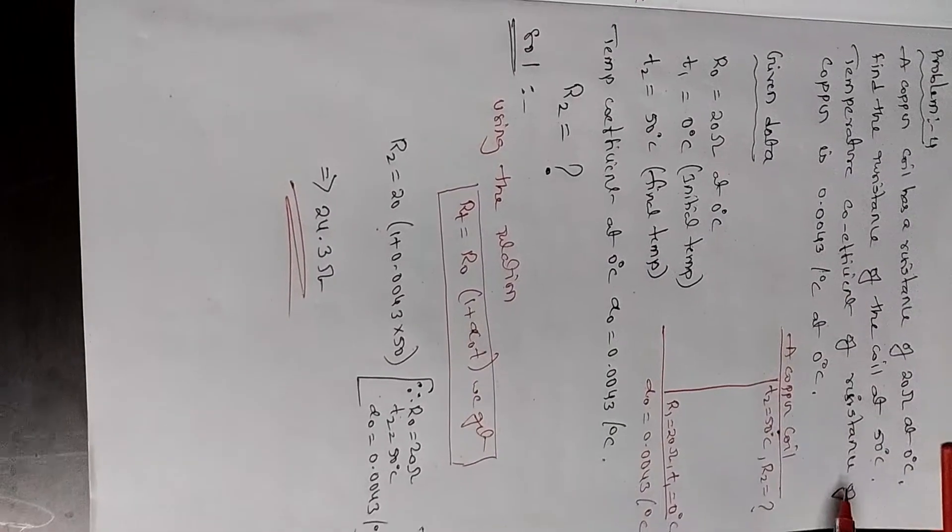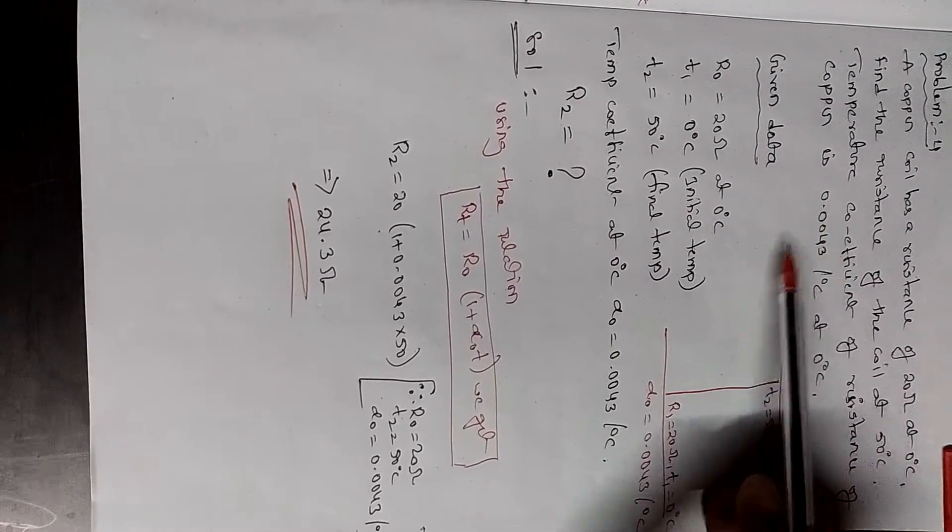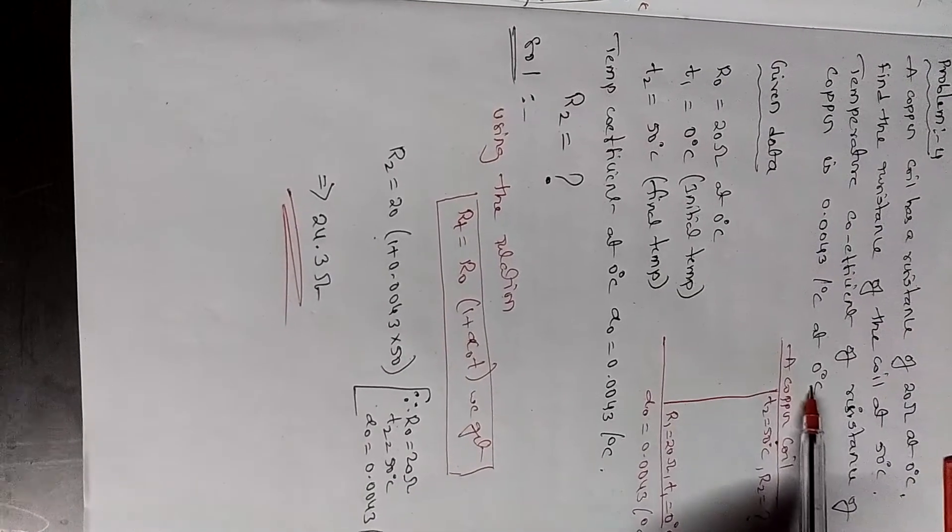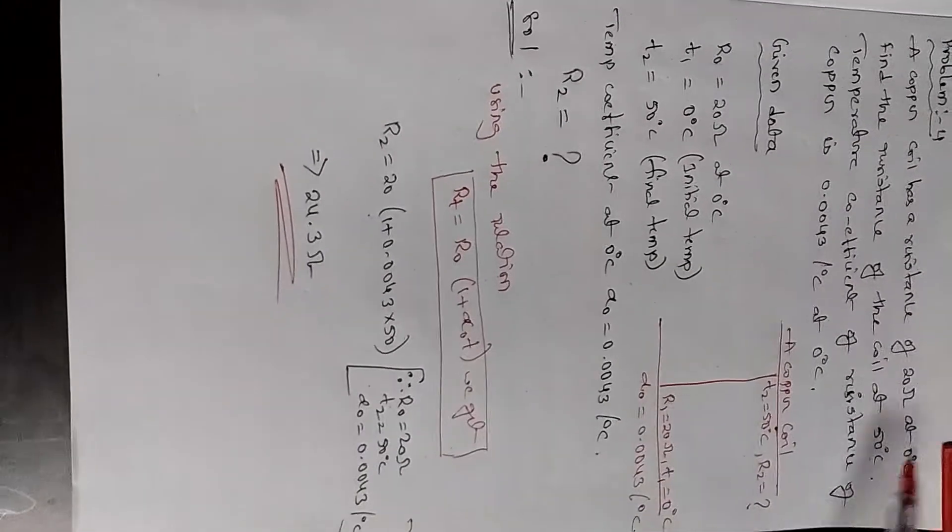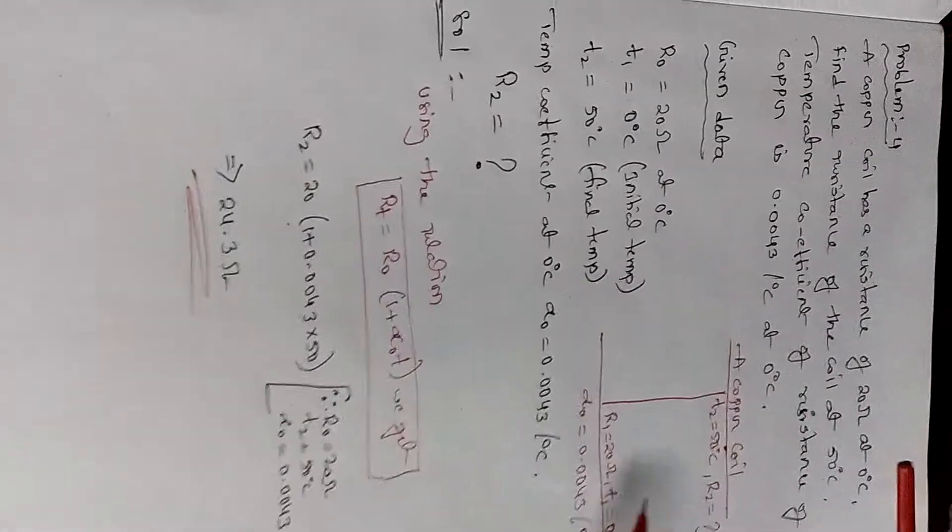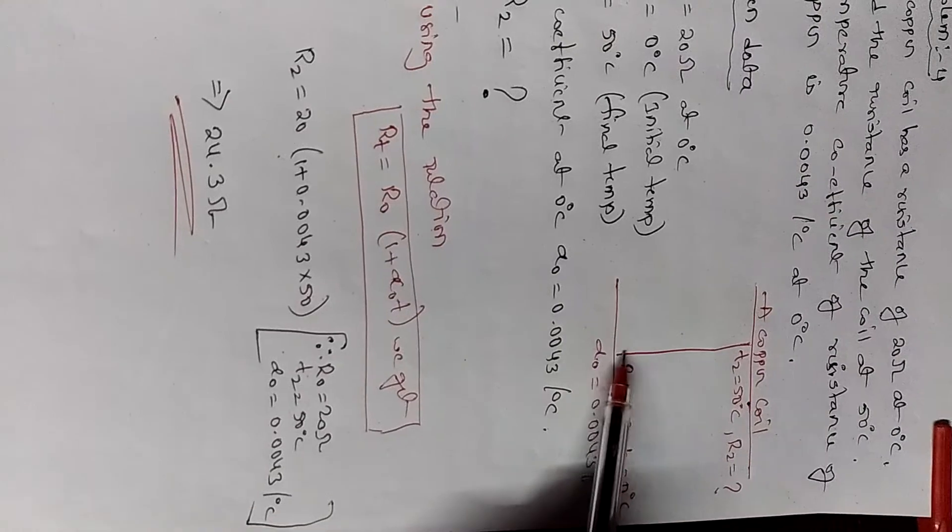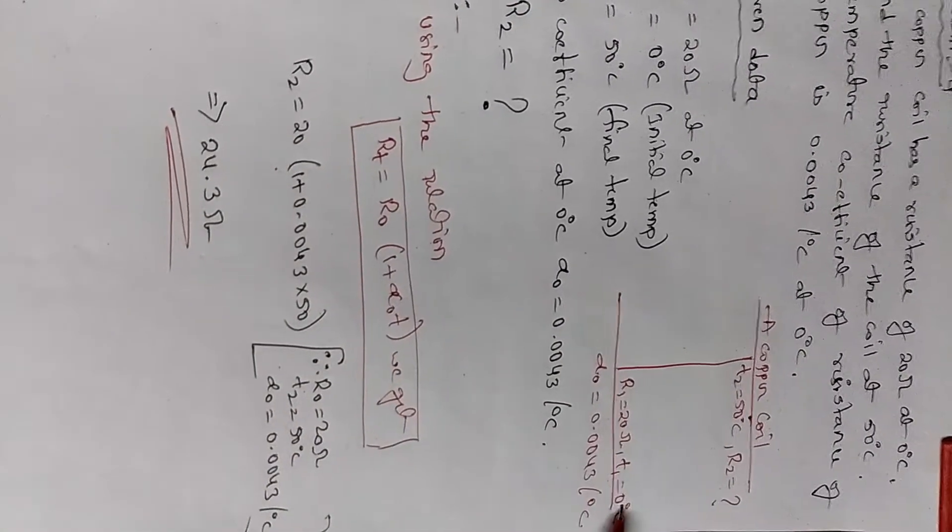The temperature coefficient of resistance is given as 0.0043 per degree centigrade at 0 degrees centigrade. Now, using a small diagram, we will try to understand once again. This is the initial temperature T1, zero degrees.